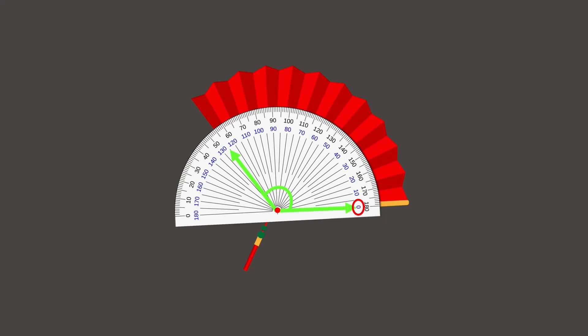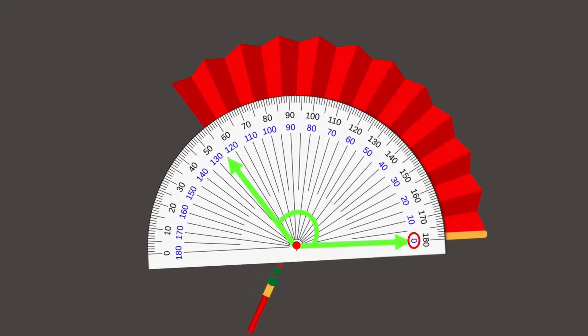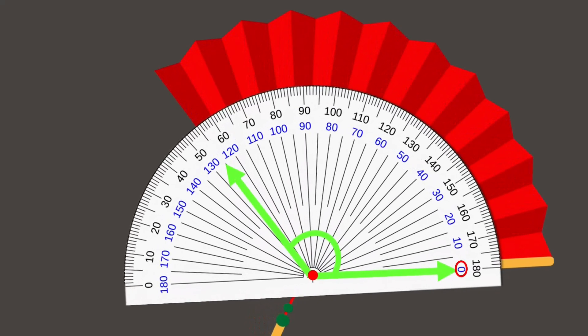This time, I am using the inner scale. Now, let's see where the other arm is pointed. It's at 125 degrees. Hence, this angle measures 125 degrees.